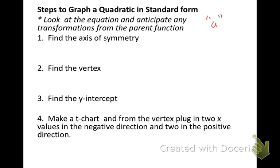You'll want to pick out the a, b, and c values from the equation. Once you do that, you can find the axis of symmetry and the vertex. The equation form is x equals, and the formula is you take the negative of the b value and divide it by 2 times a.